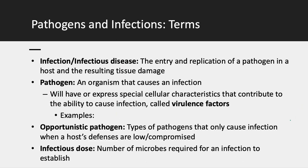A true pathogen will cause infection in any host regardless of whether that host is well or immunocompromised — for example, coronavirus or influenza will cause infection no matter how healthy you are. Opportunistic pathogens, on the other hand, cause infection only when a host's defenses are down or the host is immunocompromised. An example is Cryptococcus neoformans, a fungus that only causes lung infections in immunocompromised individuals. Another example would be Klebsiella.